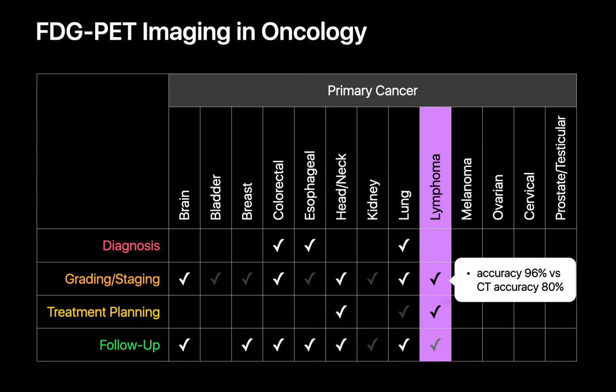FDG PET-CT imaging plays an important role in many lymphomas. Conventional CT imaging is often limited in its ability to stage lymphoma since it depends mainly on the size of a lymph node, and it's also limited in detecting extranodal disease and bone marrow involvement. FDG PET-CT often does a better job of staging lymphoma than CT, and it's a valuable means of evaluating a patient's response during and after chemotherapy — particularly since it can be tough to tell if a residual lymph node on CT represents post-treatment fibrosis or viable residual lymphoma. In patients in remission, FDG PET-CT is not routinely used because of the frequency of false positives, but may be used if lymphoma appears to have recurred.